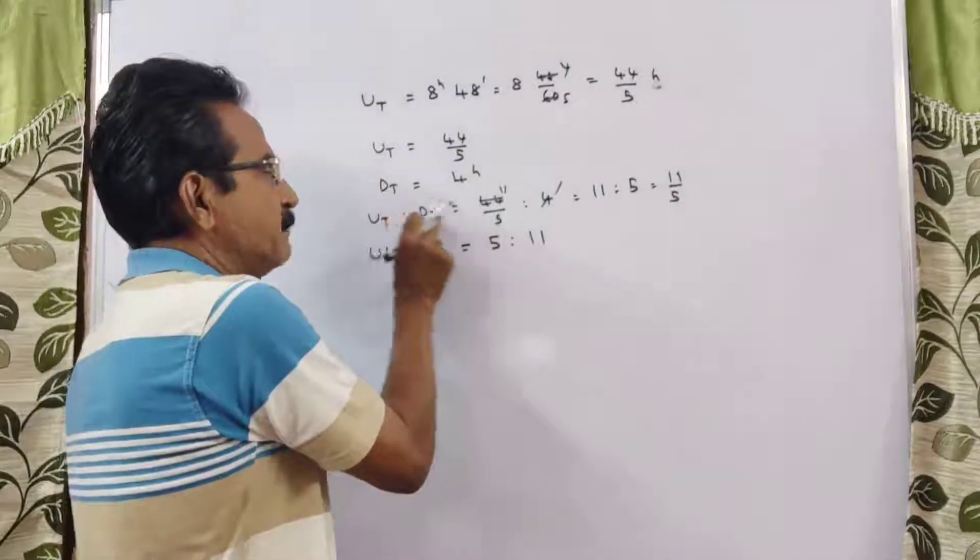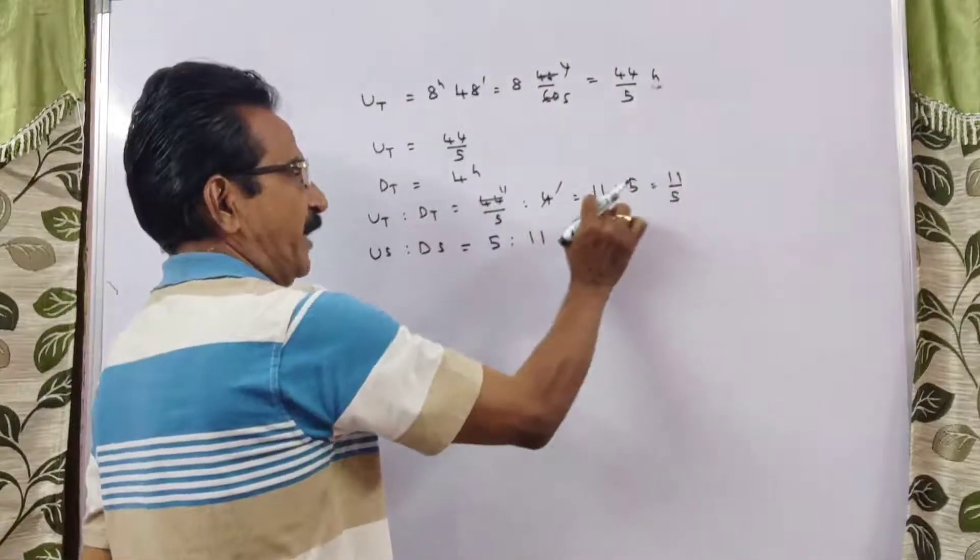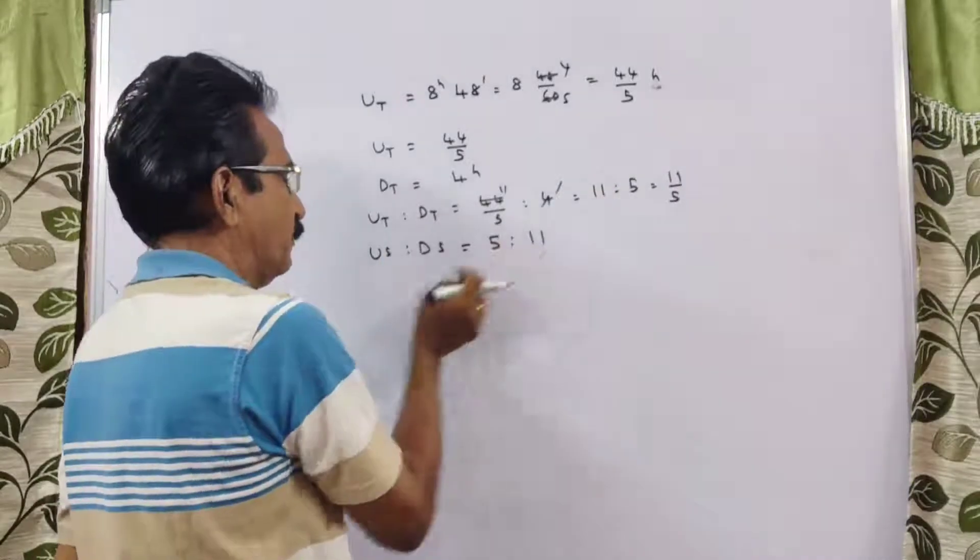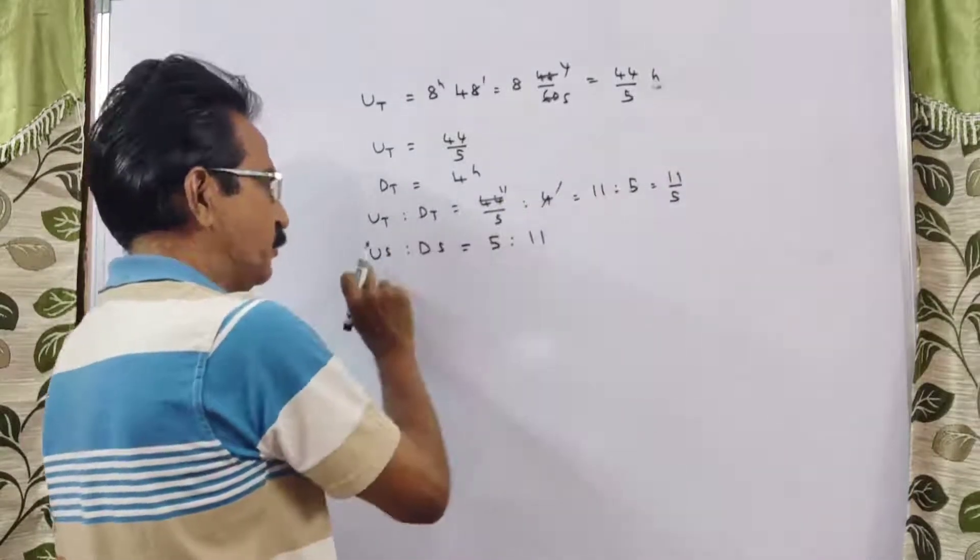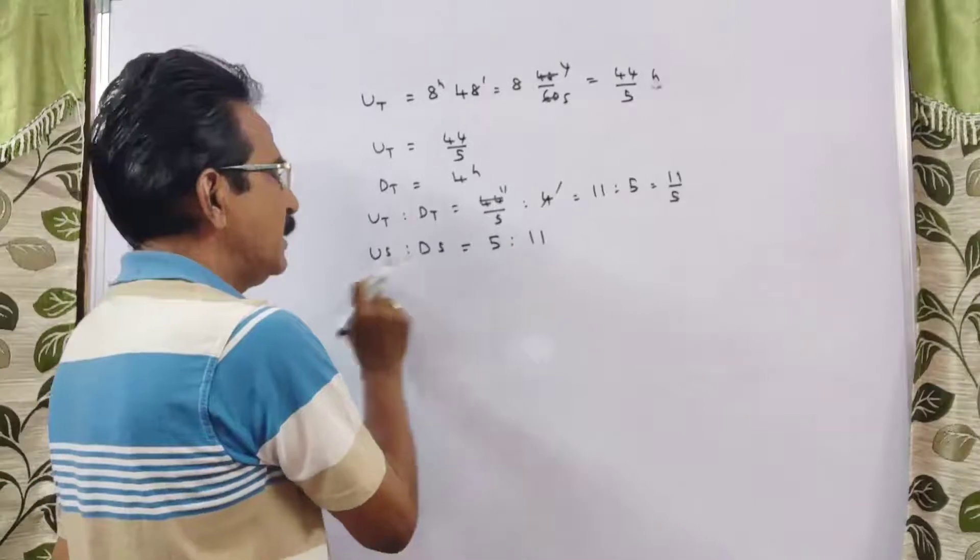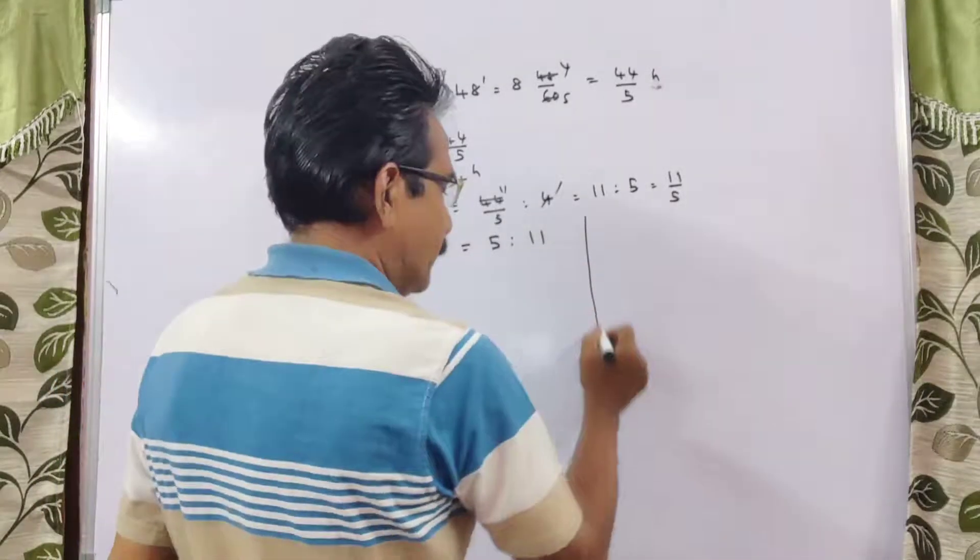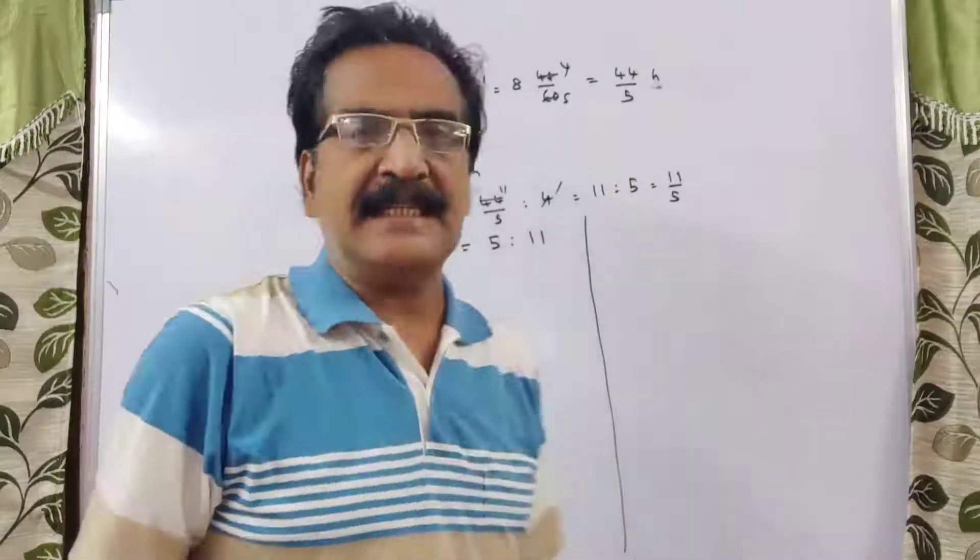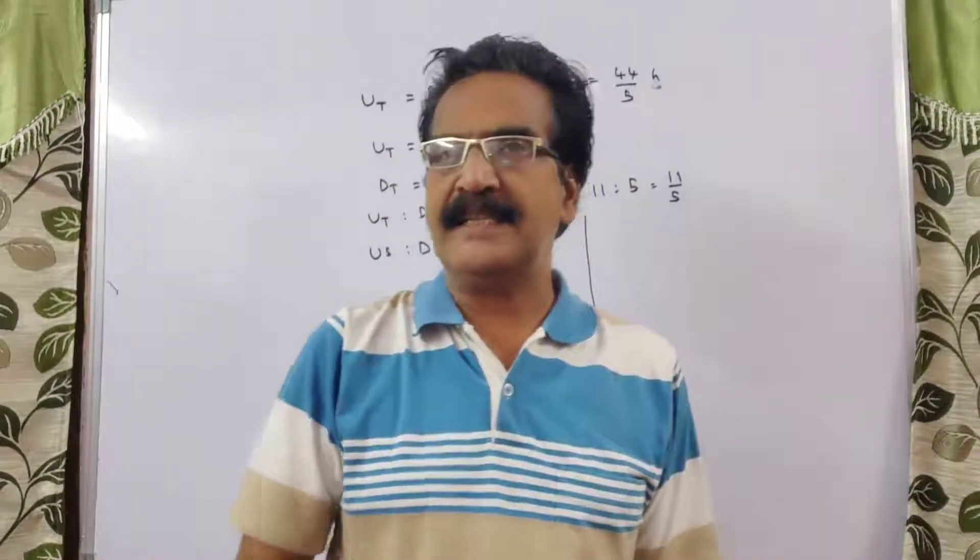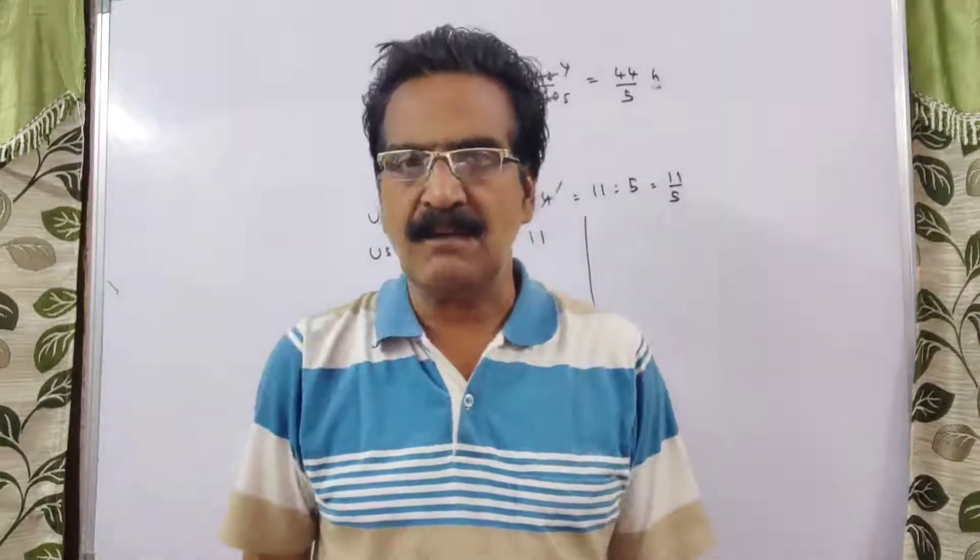Now you know us (upstream speed) and ds (downstream speed). You need to find the ratio between the speed of the boat in still water and the speed of the current.